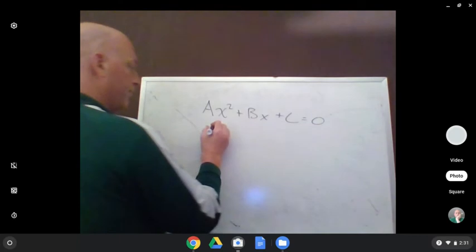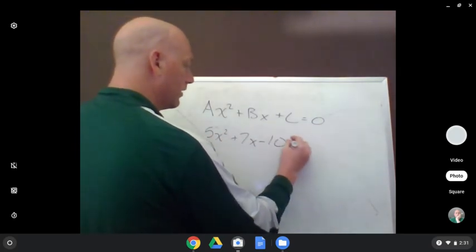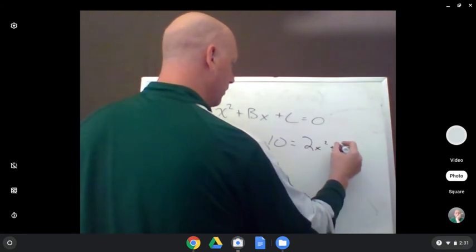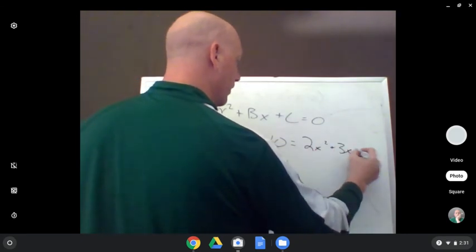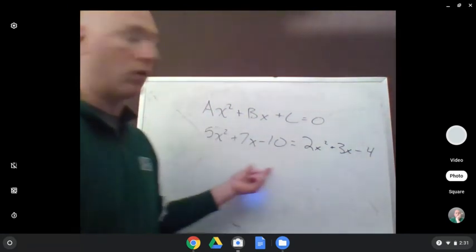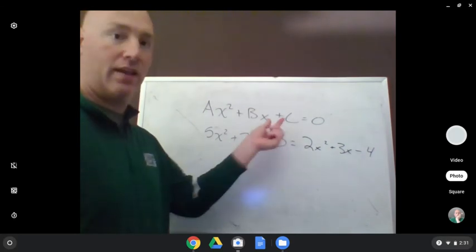So let's say I had 5x squared plus 7x minus 10 equals 2x squared plus 3x minus 4. Well, right now, I don't have everything on one side, so it is not in standard form. This does not look like that. I want to make it look like that.